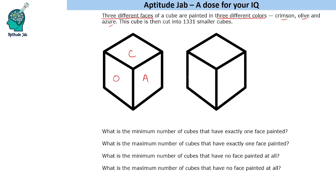The second possibility is if we paint one side crimson and another side azure, then no matter which remaining side we paint olive, there will be a common border between two of the painted faces. So basically we get two possible combinations in which we can paint these cubes — one will give us the maximum values and the other will give us the minimum values.